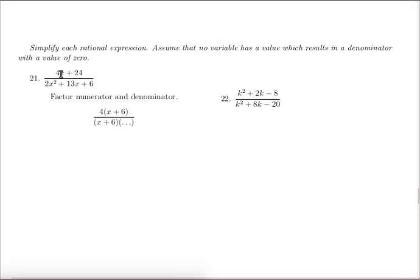I can see that a 4 factors out of the top so I've got 4 times x plus 6. The bottom, 4 does not factor out, so the only factoring that I'm interested in is if x plus 6 factors out.